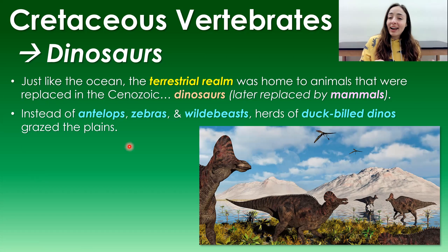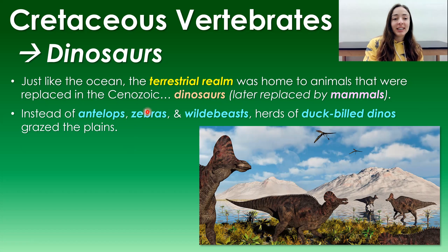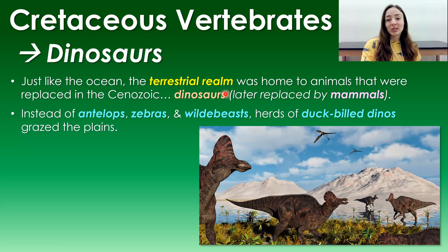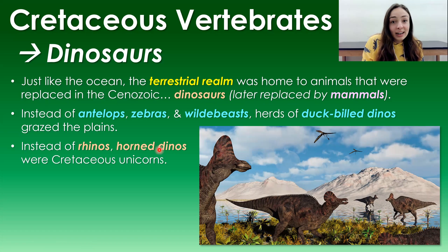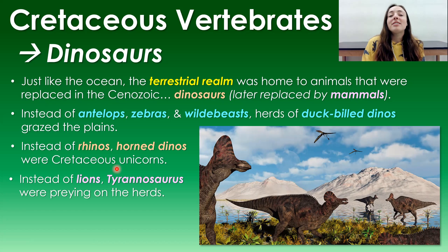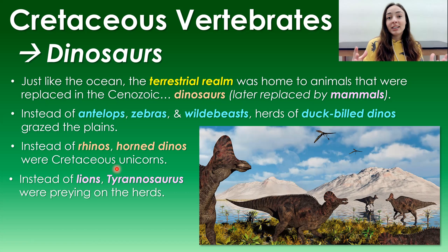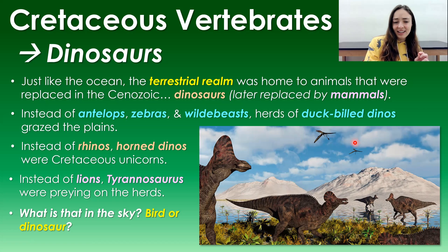Now for what you've been waiting for — the dinosaurs. In the Cretaceous terrestrial realm, dinosaurs dominated just as marine reptiles dominated the oceans. Instead of antelope, zebra, and wildebeest herds, there were herds of duck-billed dinosaurs. Instead of horned rhinos, there were horned dinos like Triceratops. Instead of lions as the top predator, you had Tyrannosaurus — a genus that included many terrifying species — threatening those herds of horned dinosaurs.